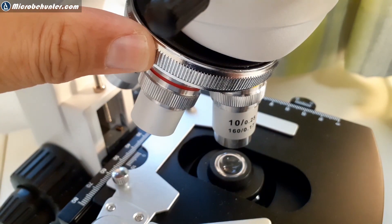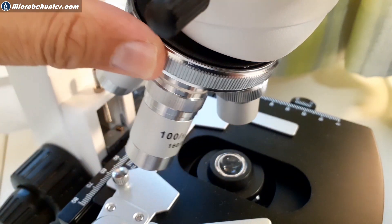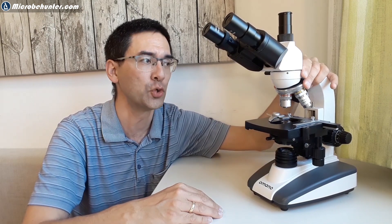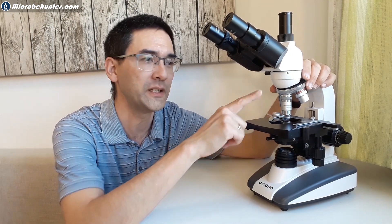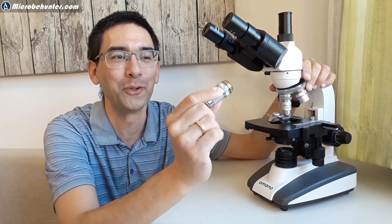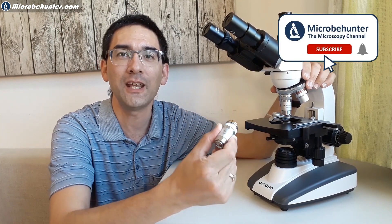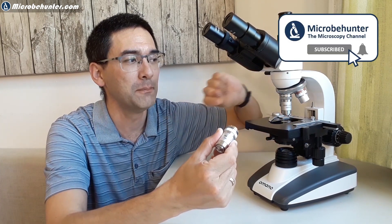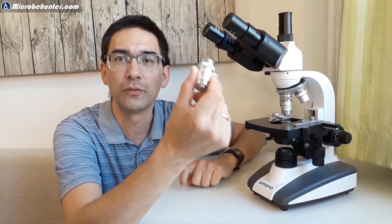This microscope comes with four objectives installed: four times, ten times, forty times and a 100 times oil immersion objective and these are standard 160 millimeter objectives. This means that they are readily available and if you want to you can buy replacement objectives like I've got one over here, this is a 60 times objective. If I would like to change the magnification around then I can simply exchange those objectives and replace one with another.